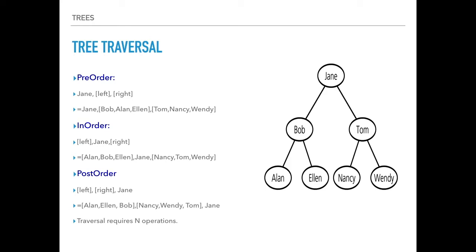In-order traversal of the names tree: go left to Bob's subtree — Alan first, then Bob, then Eileen — then back to Jane, then to the right subtree. For the right subtree, go left to Nancy first, then Tom, then William. Every time you visit a subtree, treat it as a new tree and apply the same traversal strategy recursively.